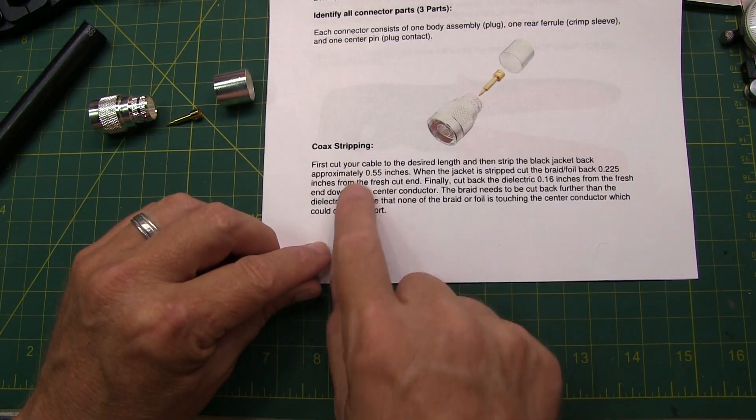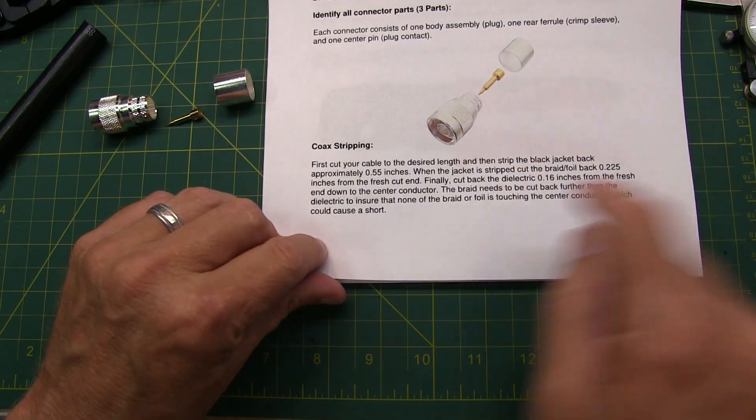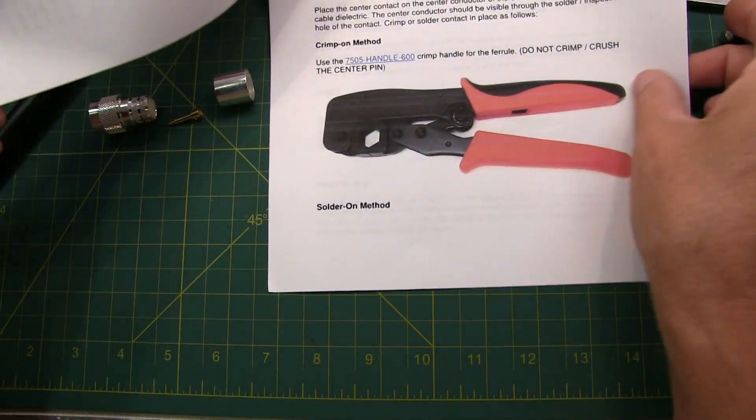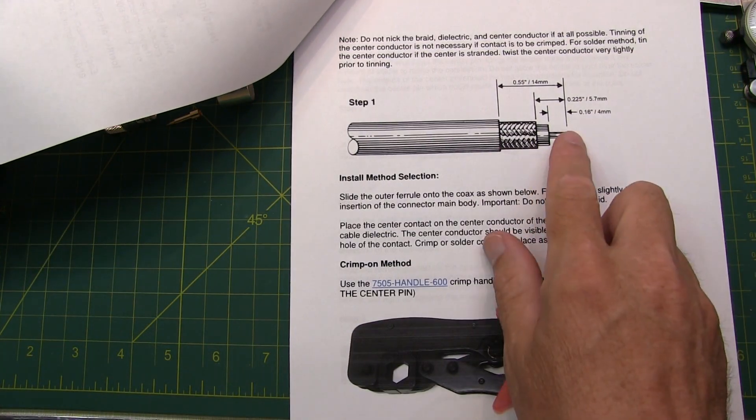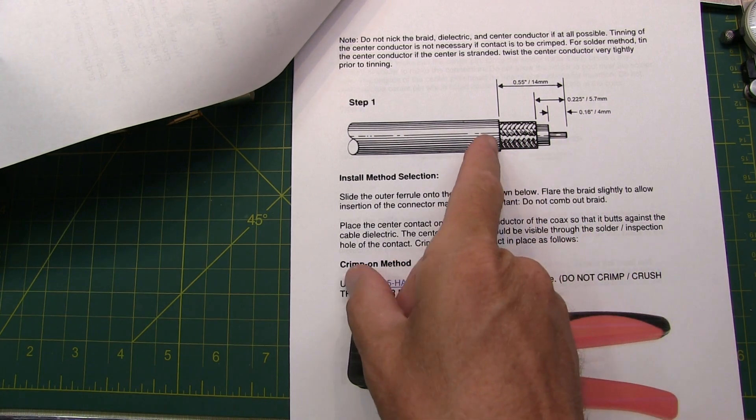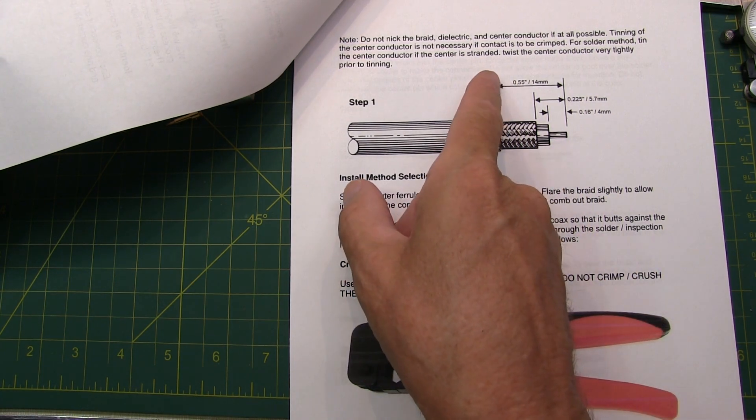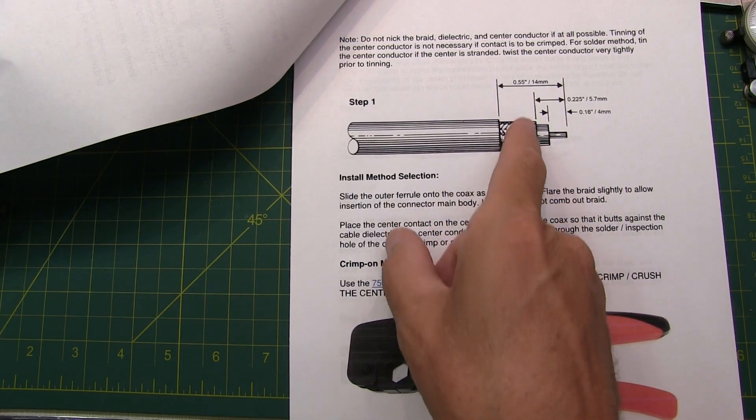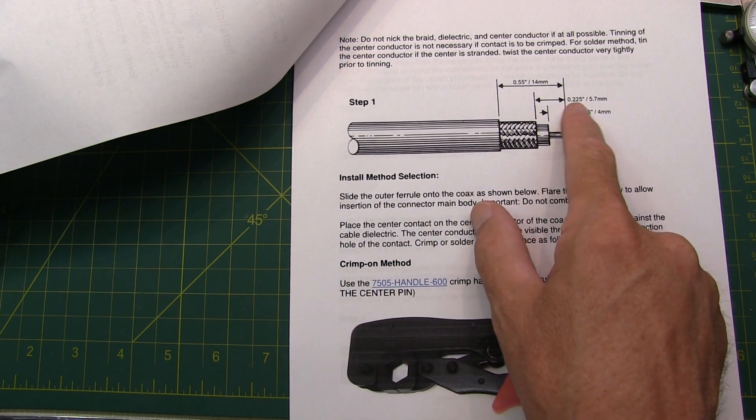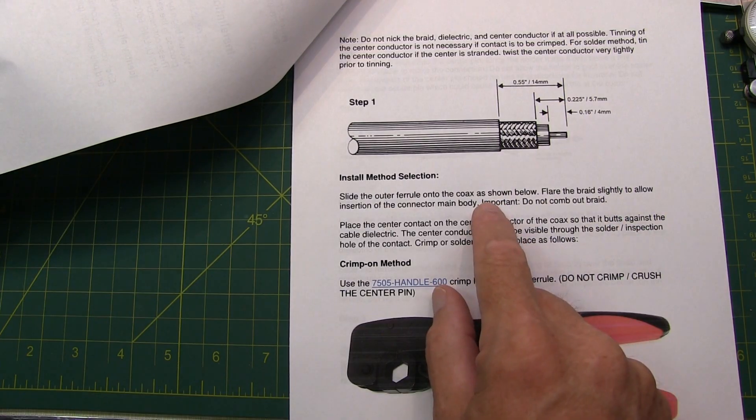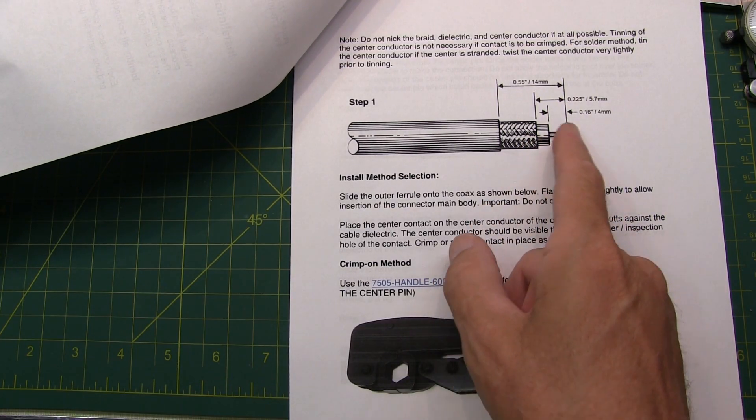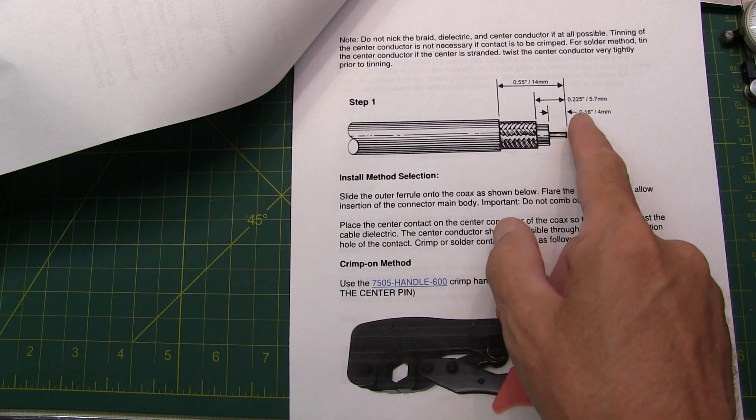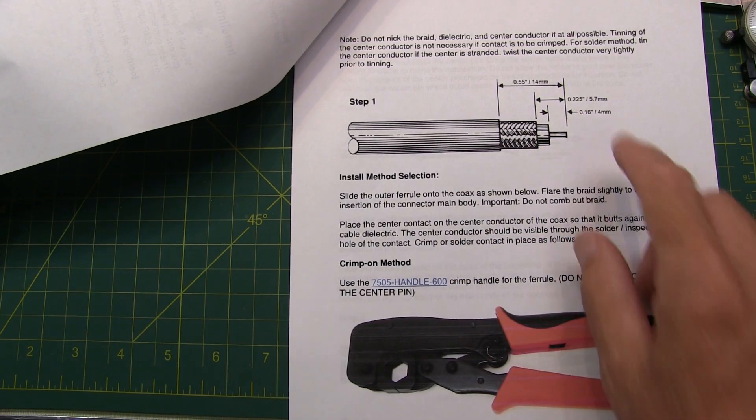The installation guide includes a coax stripping guide which is spelled out here and then shown in this diagram. I'm going to strip back the main insulation just a little over half an inch, 0.55 inches, then strip back the shielding just under a quarter of an inch or 0.225 inches, and then strip back to the center conductor about 0.16 inches or about 4 millimeters.